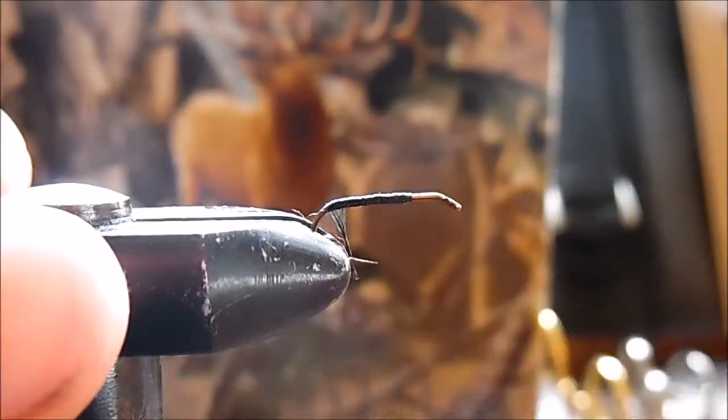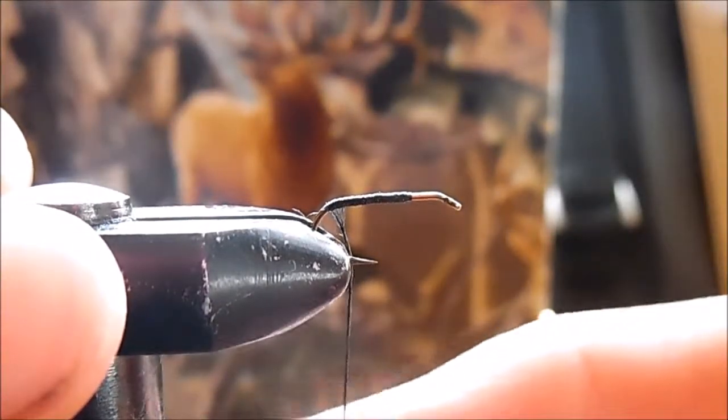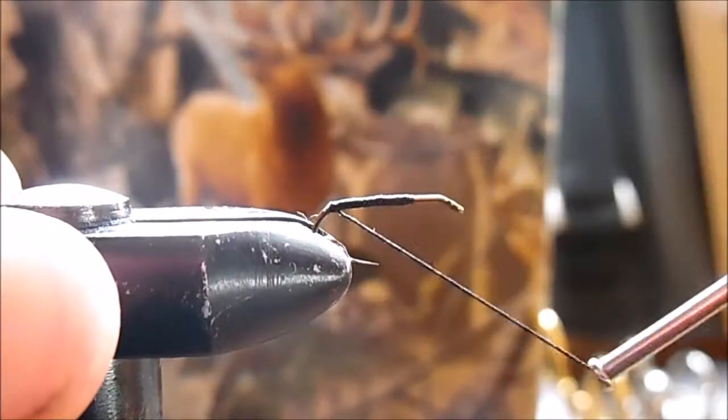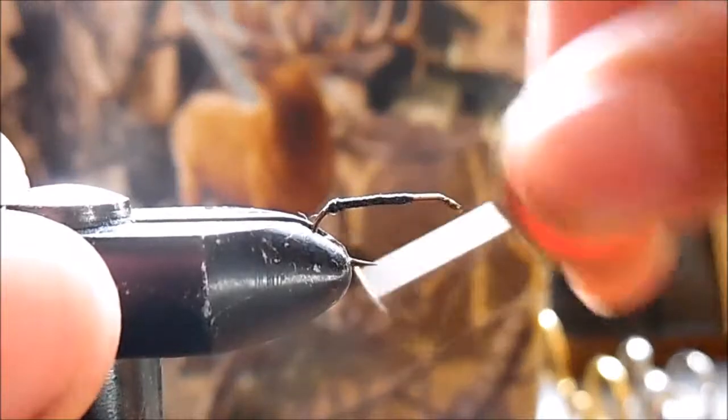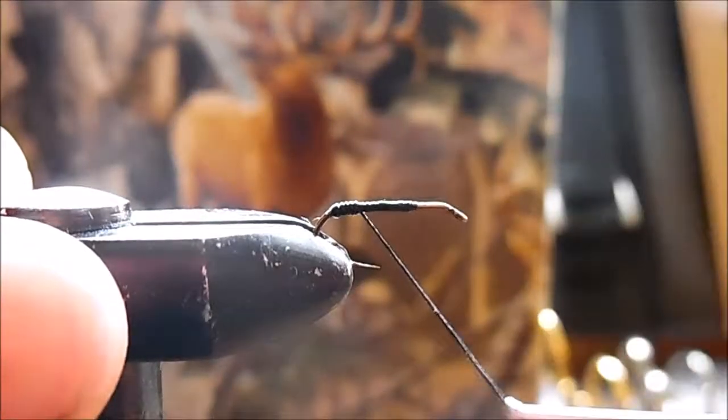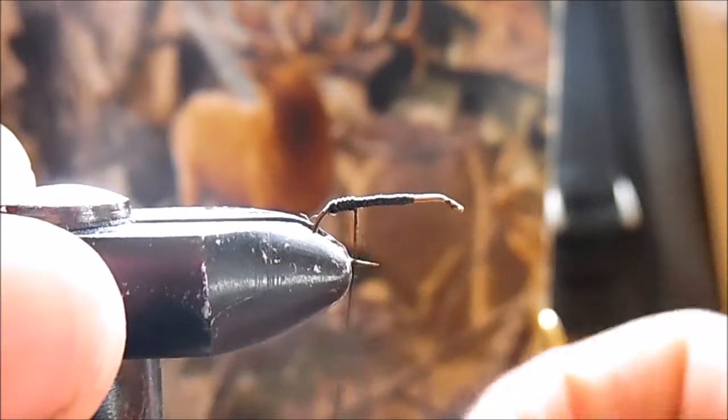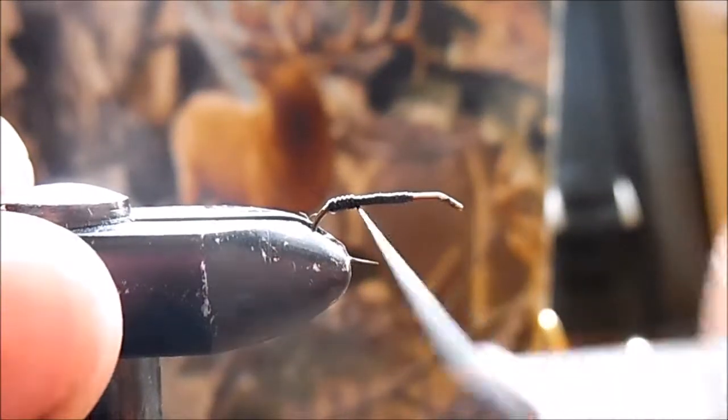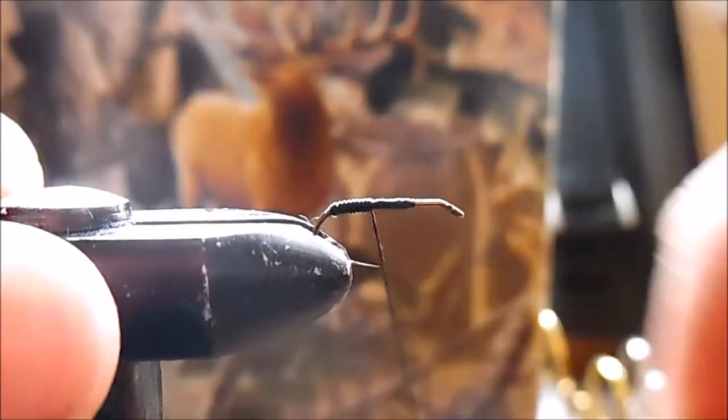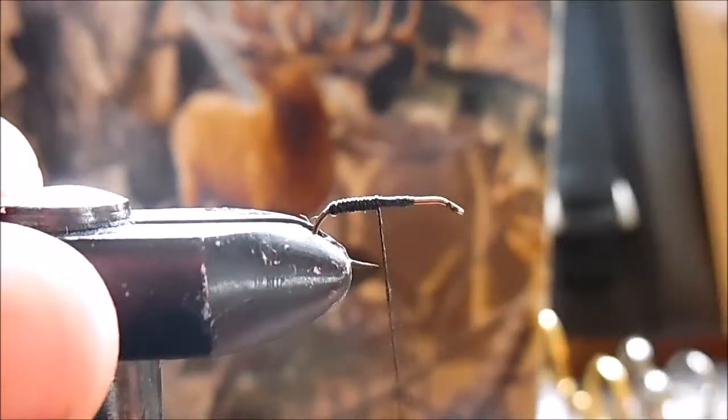Cord up our tying thread by spinning the bobbin, cord it up really well, start wrapping back up these uniform wraps. Once in a while you'll have to cord it back up again, and this will be our body.